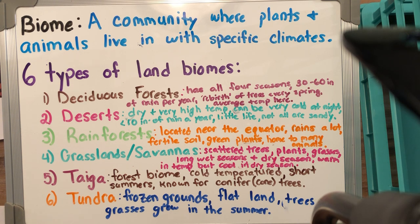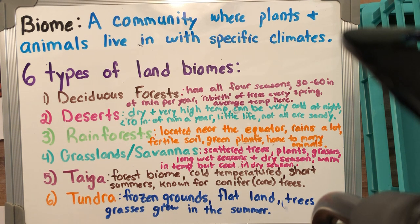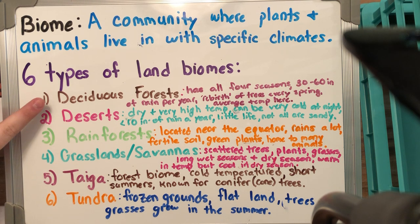A deciduous forest is very different from a taiga, which is very different from the tundra, which is very different from the grassland savannas, which is different from the desert and the rainforest. There are six different types of land biomes: a deciduous forest, a desert, a rainforest, a grassland slash savanna, a taiga, and the tundra. You can pause the video at any time to copy down what I have written.